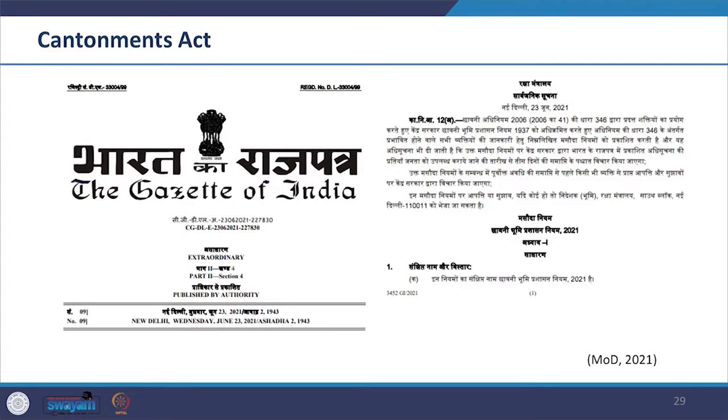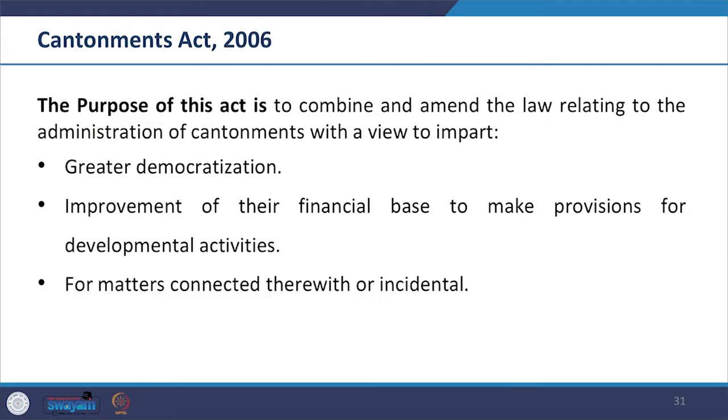The major difference in cantonment areas, unlike other ULBs, is that urban self-governance of cantonments and housing accommodation is subject matter of the Union of India. The overall municipal administration of a notified cantonment is the function of the cantonment board, which are democratic bodies like ULBs. The Ministry of Defence on June 23, 2021 issued the draft Cantonment Land Administration Rules 2021. There is also a Cantonment Bill 2020. For the purpose of review we will look at the 2006 Cantonment Act.